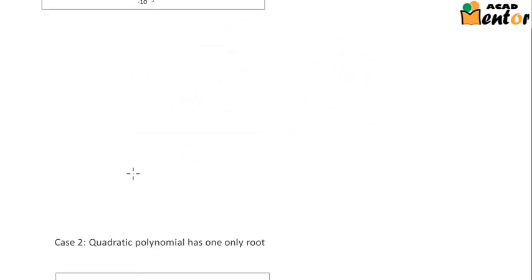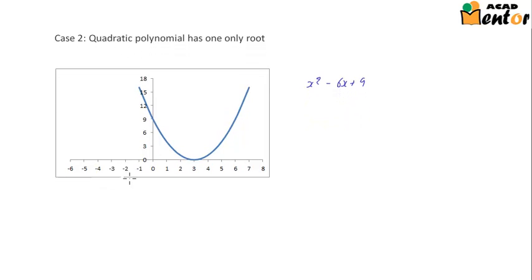Now let's look at the second graph. This graph is also a quadratic polynomial, but it intersects the x-axis at only one point. That means this polynomial has only one root.